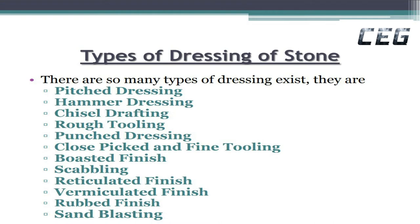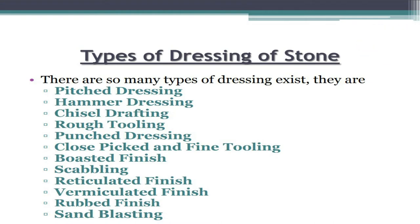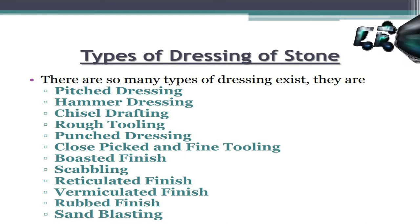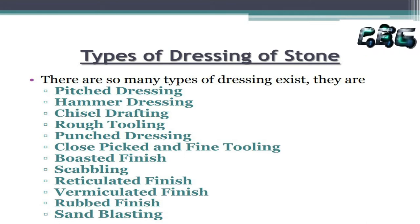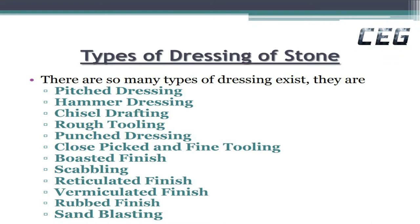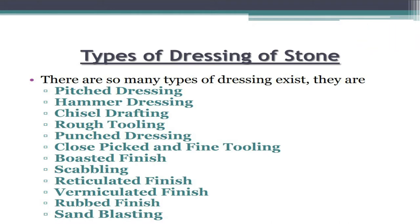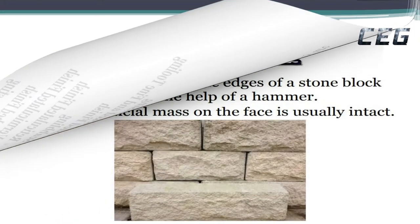Types of dressing of stone: There are many types of dressing. They are pitch dressing, hammer dressing, chisel drafting, rough tooling, punch dressing, close picked and fine tooling, boasted finish, scabbling, reticulated finish, vermiculated finish, rubbed finish, and sandblasting.